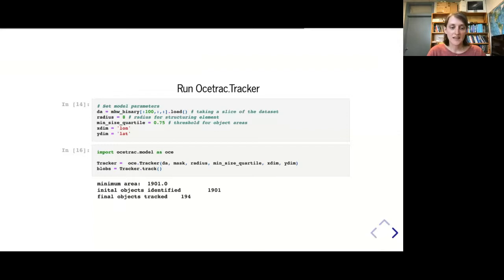What OAStrack gives you is the minimum area - the number of pixels at the 75th percentile. The initial objects identified is before it's eliminated objects that are too small. The final is the resulting tracked objects that have been size filtered and connect in time. You can see how much it shrinks the dataset after tracking.